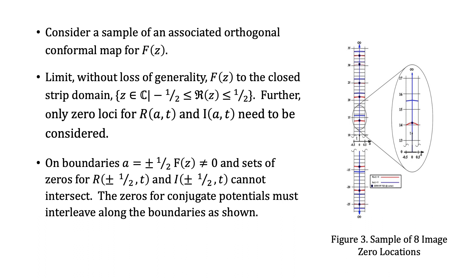On boundaries a = ±1/2, F(z) is not equal to zero, and sets of zeros for R on the boundary and I on the boundaries cannot intersect. The zeros for conjugate potentials must interlogue along the boundaries as shown.